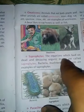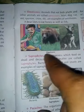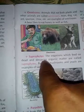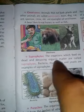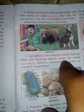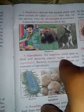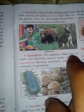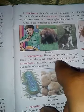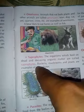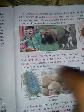Saprophytes are the organisms which feed on dead and decaying organic matter. Bacteria, mushroom, and yeast are examples of saprophytes.